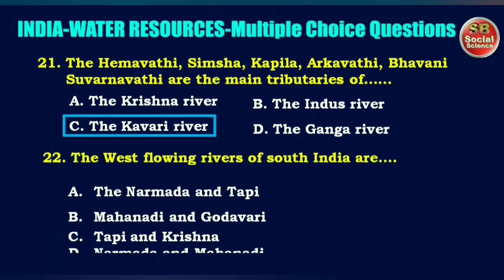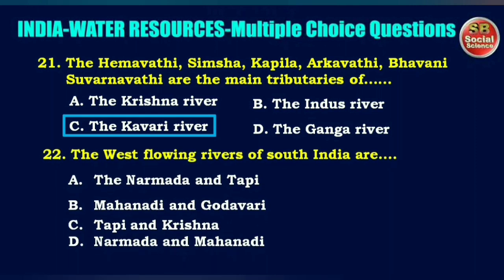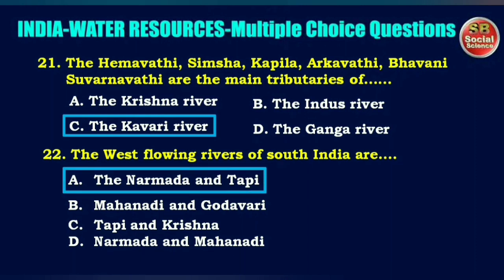Next question: the west flowing rivers of South India are — options are the Narmada and Tapi rivers, Mahanadi and Godavari, Tapi and Krishna, or Narmada and Mahanadi. The right answer is option A: the Narmada and Tapi rivers.